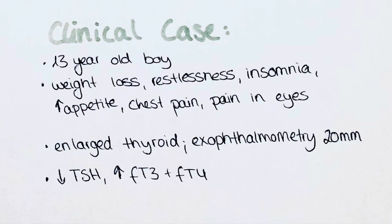This patient presents with all the classical features of Graves' disease and autoimmune hyperthyroidism. The exophthalmos is thought to be due to inflammation and swelling of the retrobulbar tissues, as well as proliferation and antibody-antigen complex deposition.